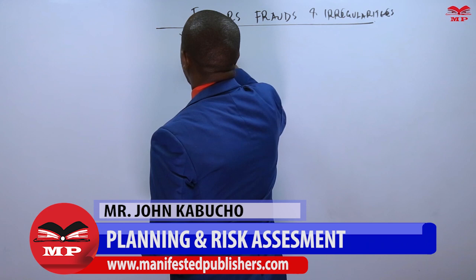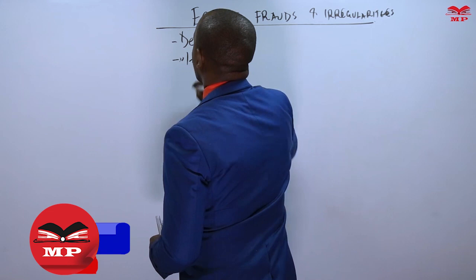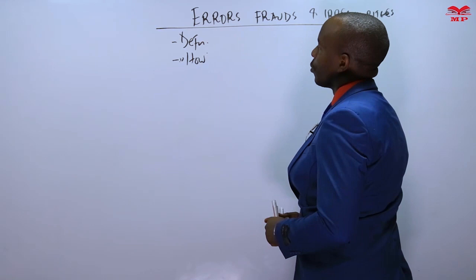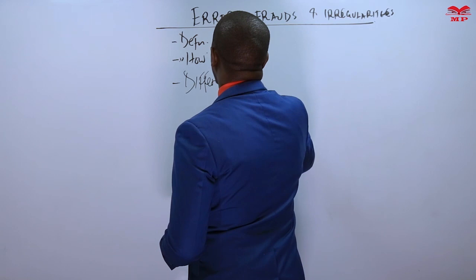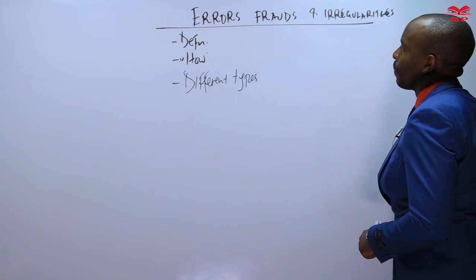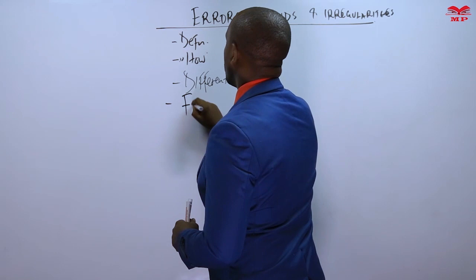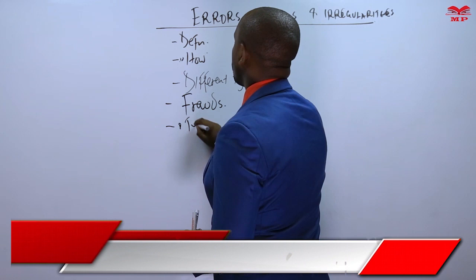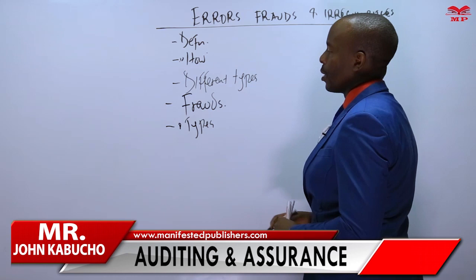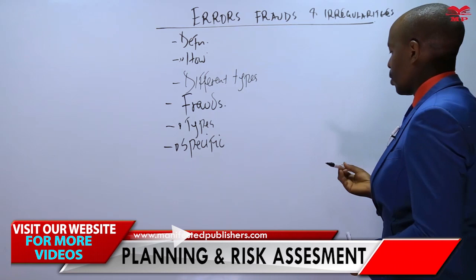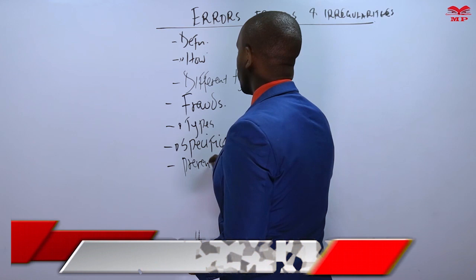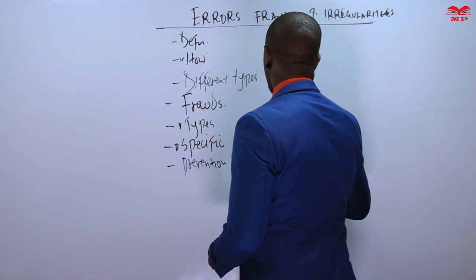We'll start with the word 'error' and do the definition. Then we are going to look at how errors occur in an organization or in the financial statement, and we'll also introduce different types of errors that you have covered previously. We'll also be looking at the word 'fraud' — its definition and types of frauds, including specific types of frauds. Lastly, we'll be looking at prevention and detection of errors and frauds.